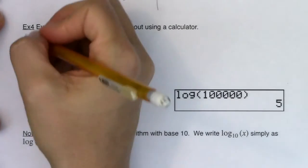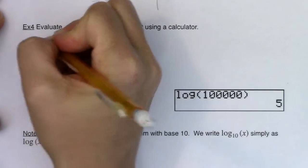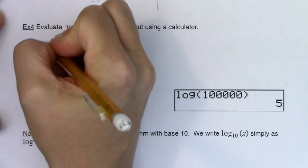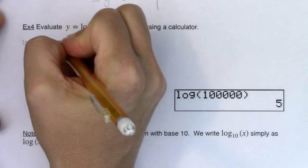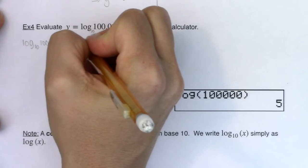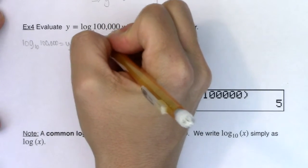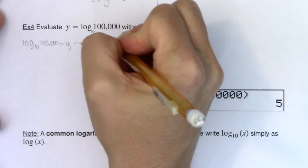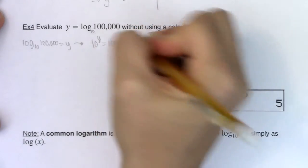If you're more comfortable taking this logarithmic equation and writing it in its equivalent exponential form, you can just tell me 10 to the y is equal to 100,000.